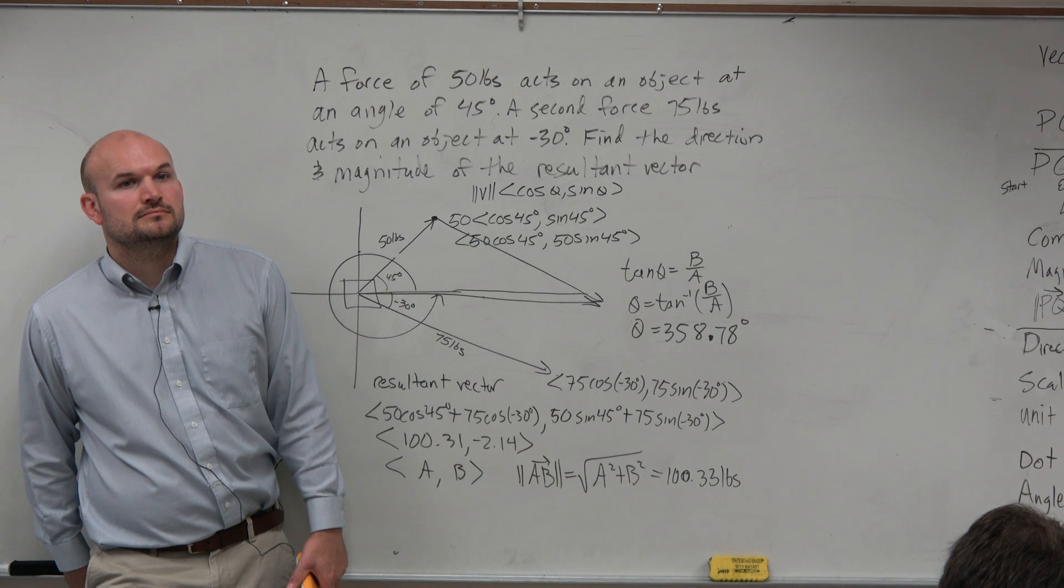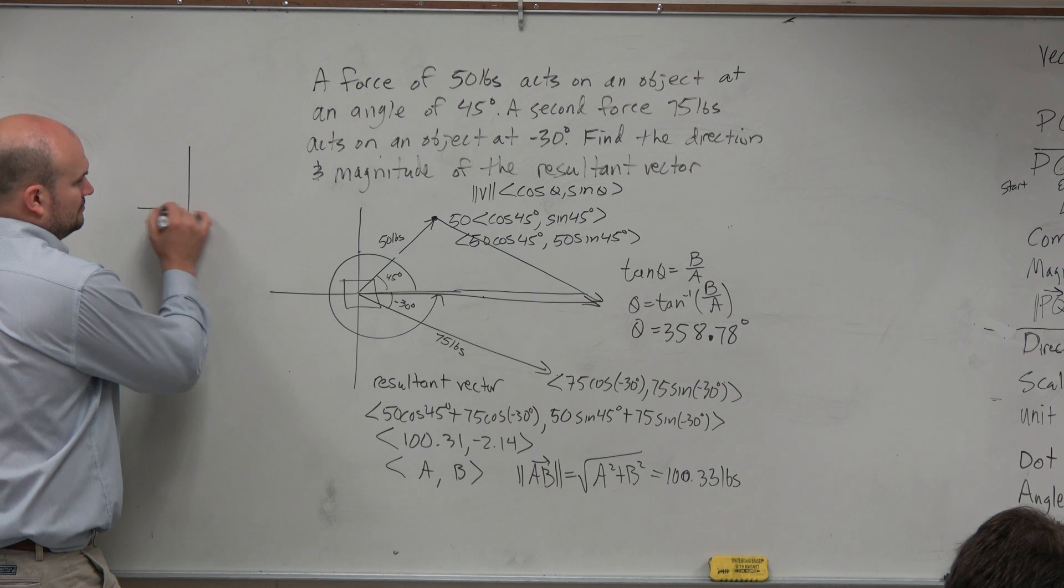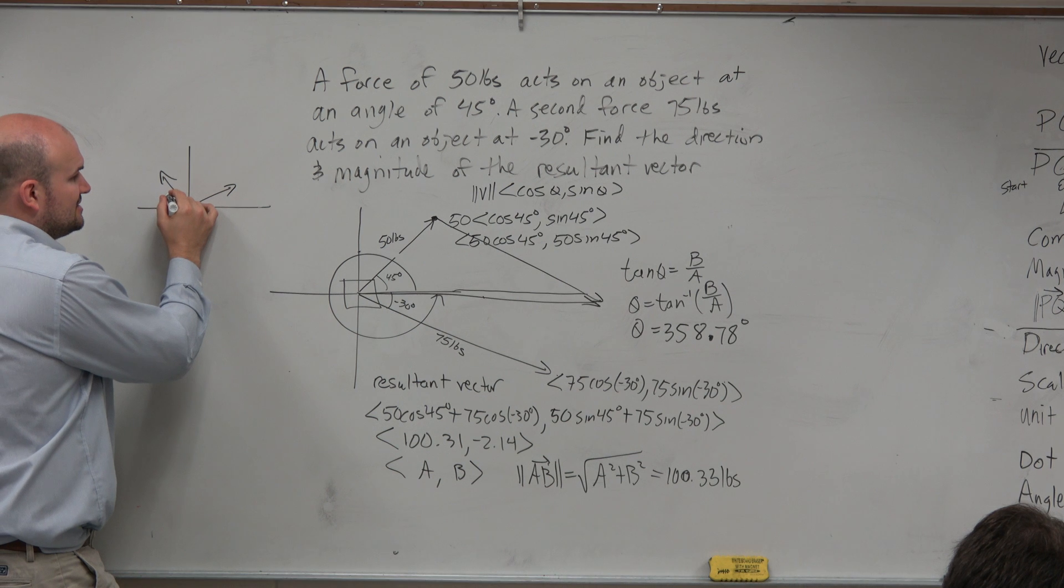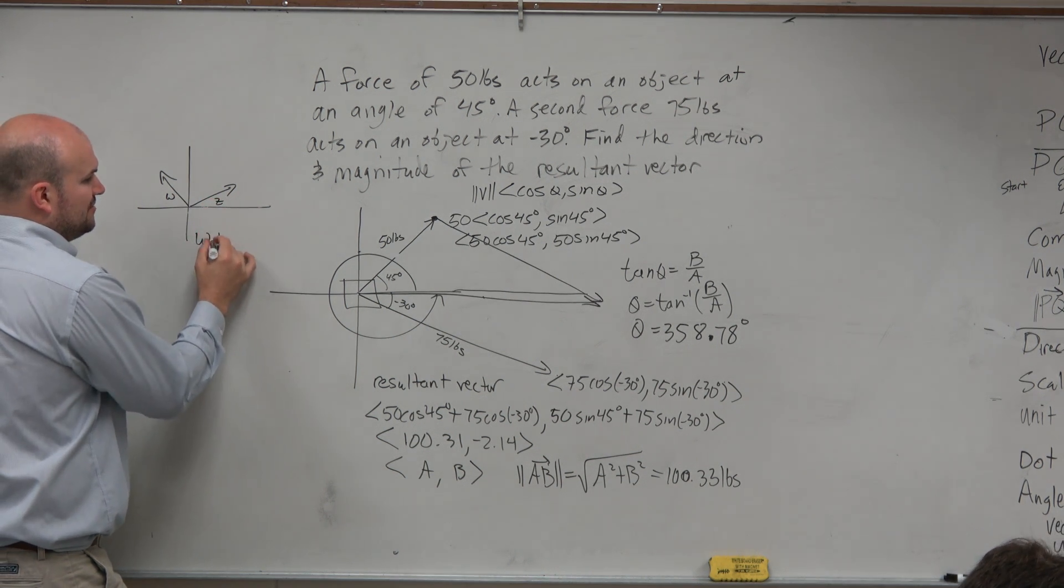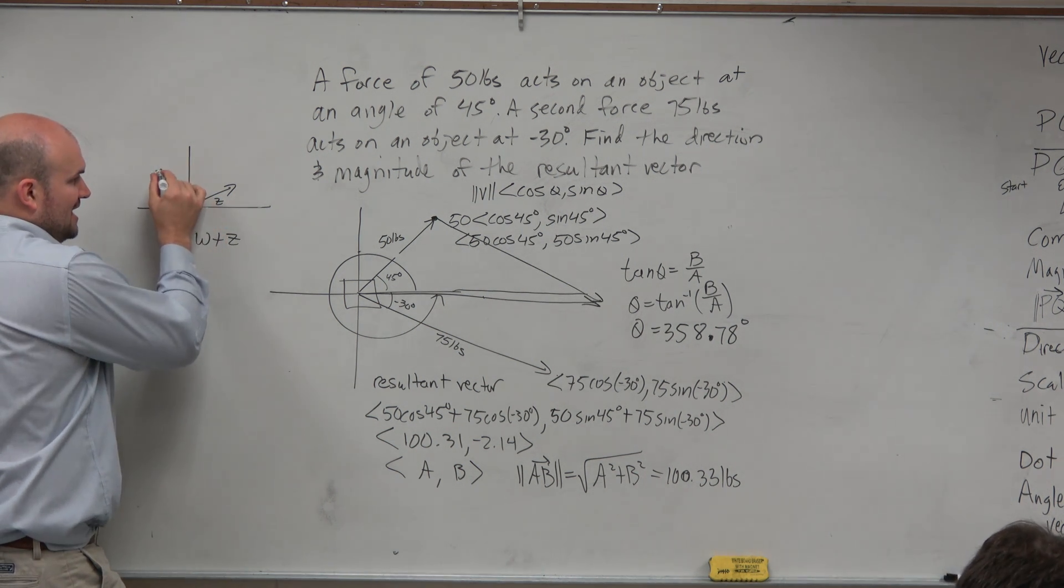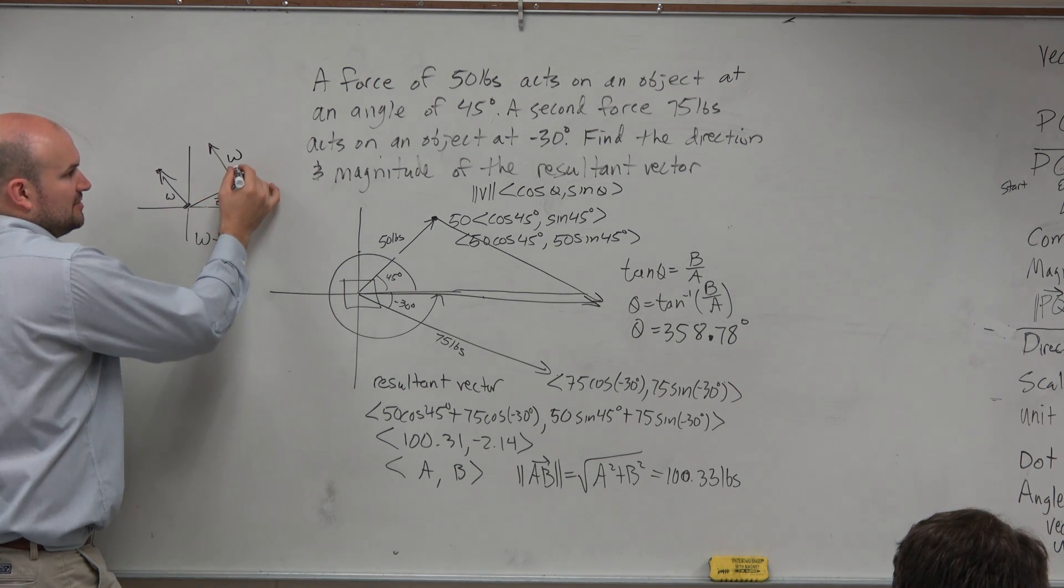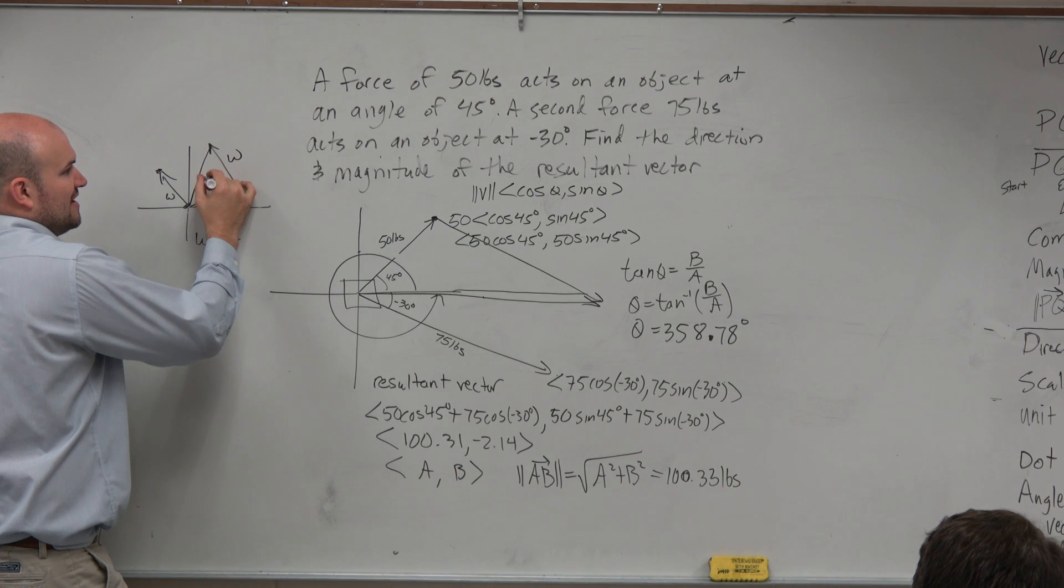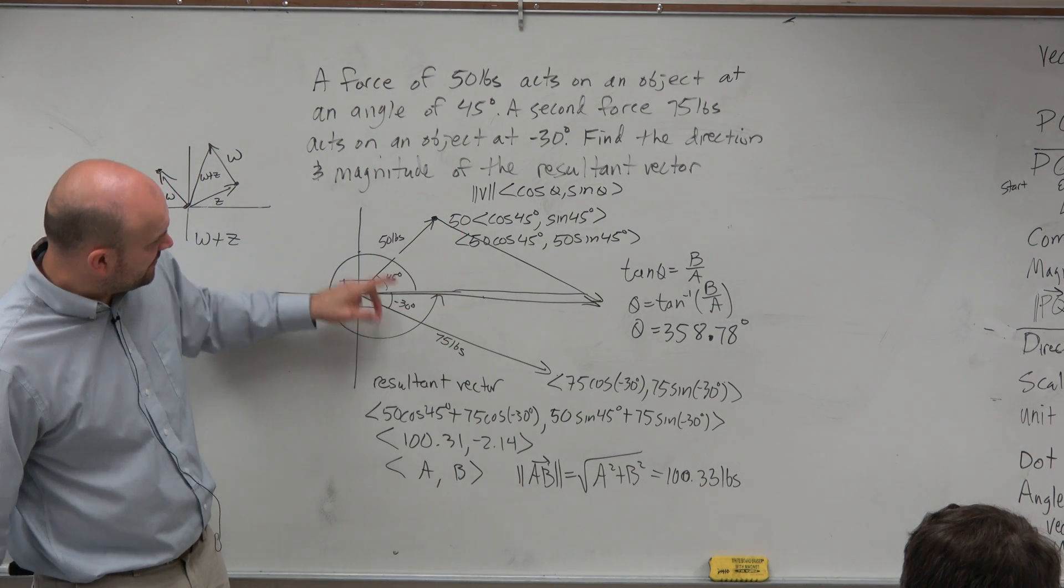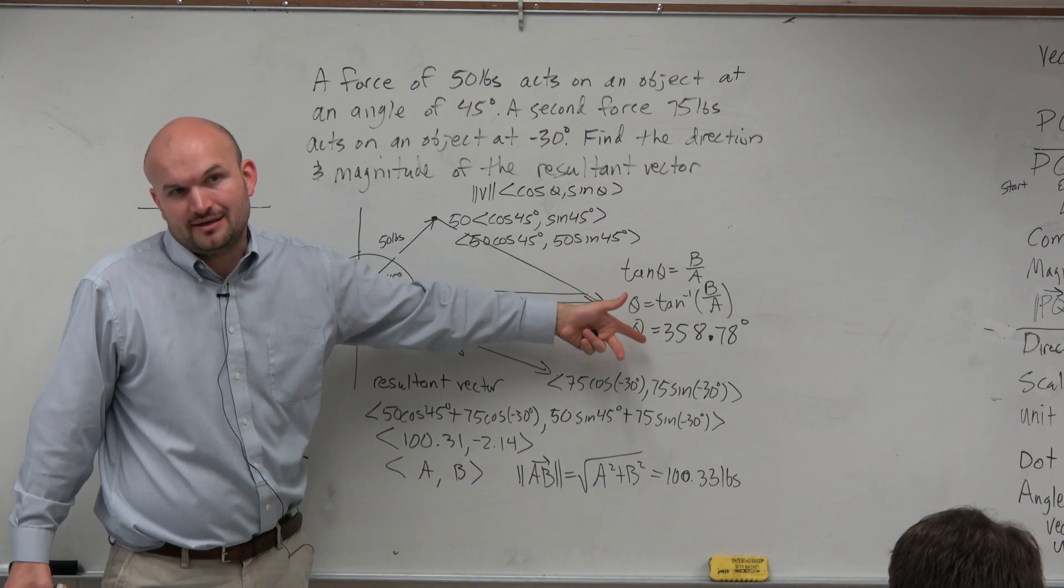If you remember, if you have two vectors, like here's a vector and here's a vector, to add them, like let's say this is w and this is z, if you want to do w plus z, basically all you need to do is take the tail, like here's the head, that's the tail. You just basically slide that to get w plus z. That's something we covered last class period. So I was just estimating just to get an idea, like obviously that's not perfect. But what I did is I took this vector and slid it to the end of the other vector so I could get an idea.